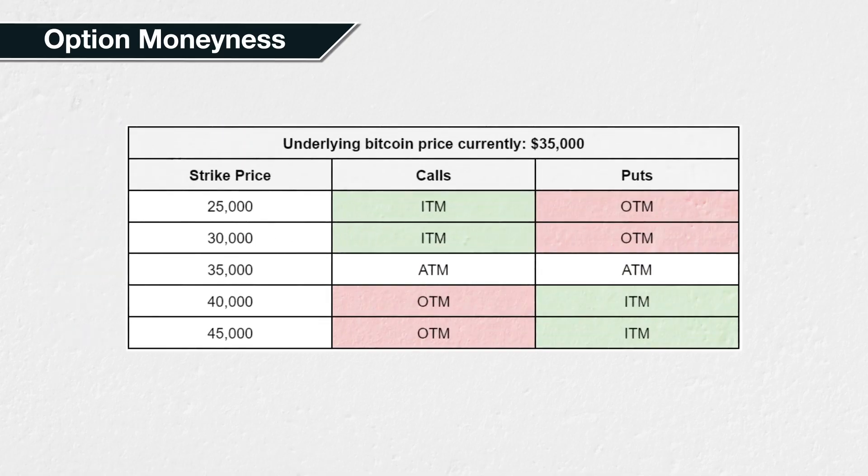For example, if Bitcoin is currently trading at a price of $35,000, we would use these three acronyms — ITM, ATM, and OTM — to describe both puts and calls as shown in this table. With the price of Bitcoin at $35,000, the $35,000 call and the $35,000 put are both at the money.